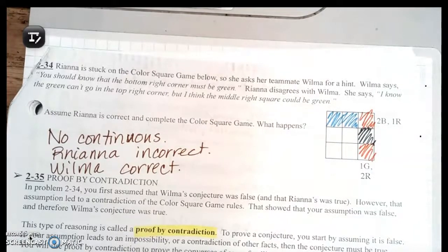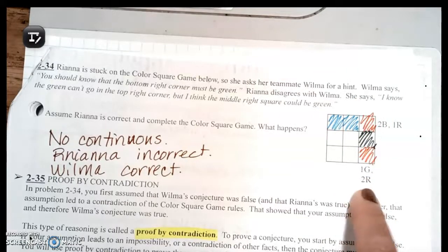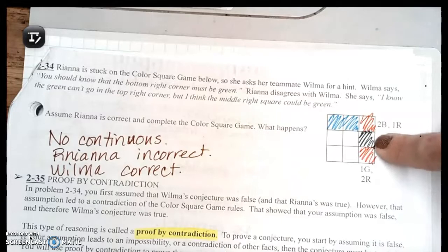Question 34 says Rihanna is stuck on the color square game, so she asked her teammate Wilma for a hint. Wilma says you should know that the bottom right corner must be green. Rihanna disagrees with Wilma. She says I know the green can't go in the top right corner, but I think the middle right square could be green. Assume that Rihanna is correct and complete the color square game. What happens?